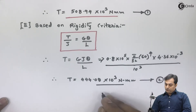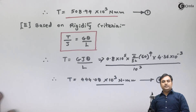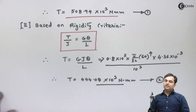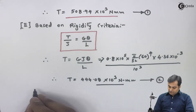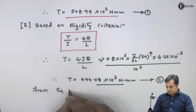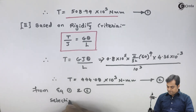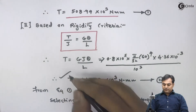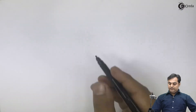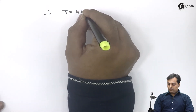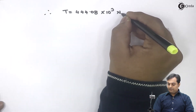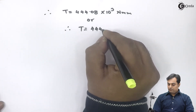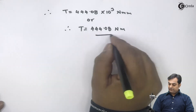From strength criteria torque was 508.94 into 10 raised to 3 Newton mm, and from rigidity criteria it is 444.08 into 10 raised to 3 Newton mm. Comparing equation 1 and 2, we select the least torque for power transmission. Therefore T equals 444.08 into 10 raised to 3 Newton mm. Converting to Newton meter by dividing by 1000, T equals 444.08 Newton meter.